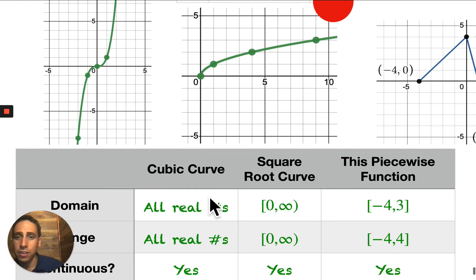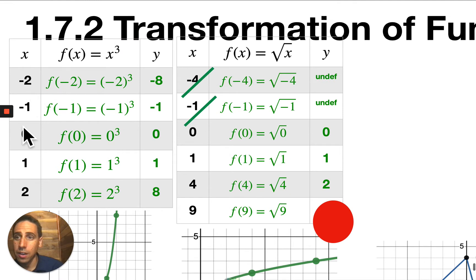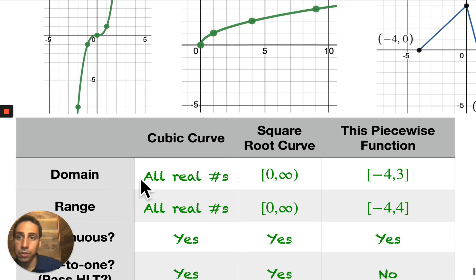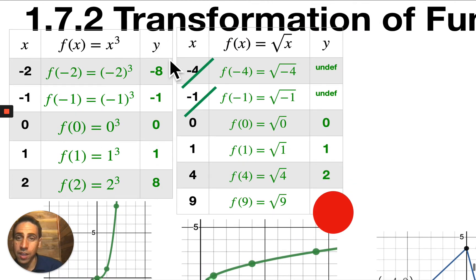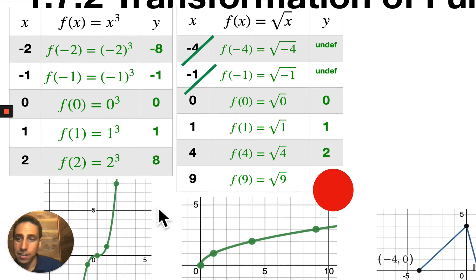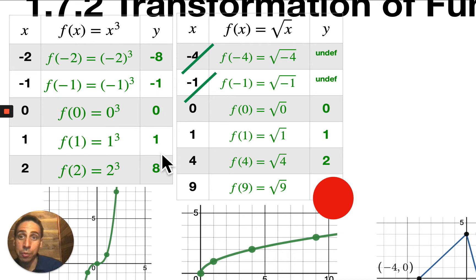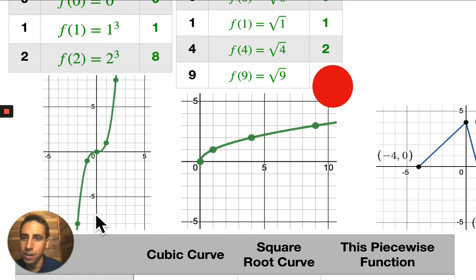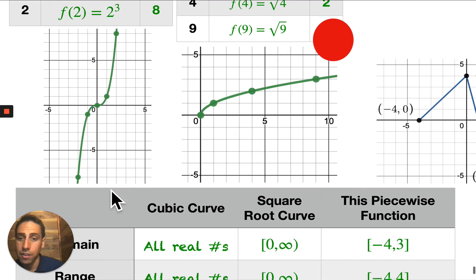Let's talk about the features of these functions. The cubic curve: the domain is all real numbers, because on the table you can take any number you want and produce a y value. The range is all real numbers, because all y values are represented. If you collect all the x values of this curve — because remember it continues on — all the x values give you all real numbers. Every number along the x-axis is represented. Collect all the y values, and every number along the y-axis is represented. So, all real numbers for both.